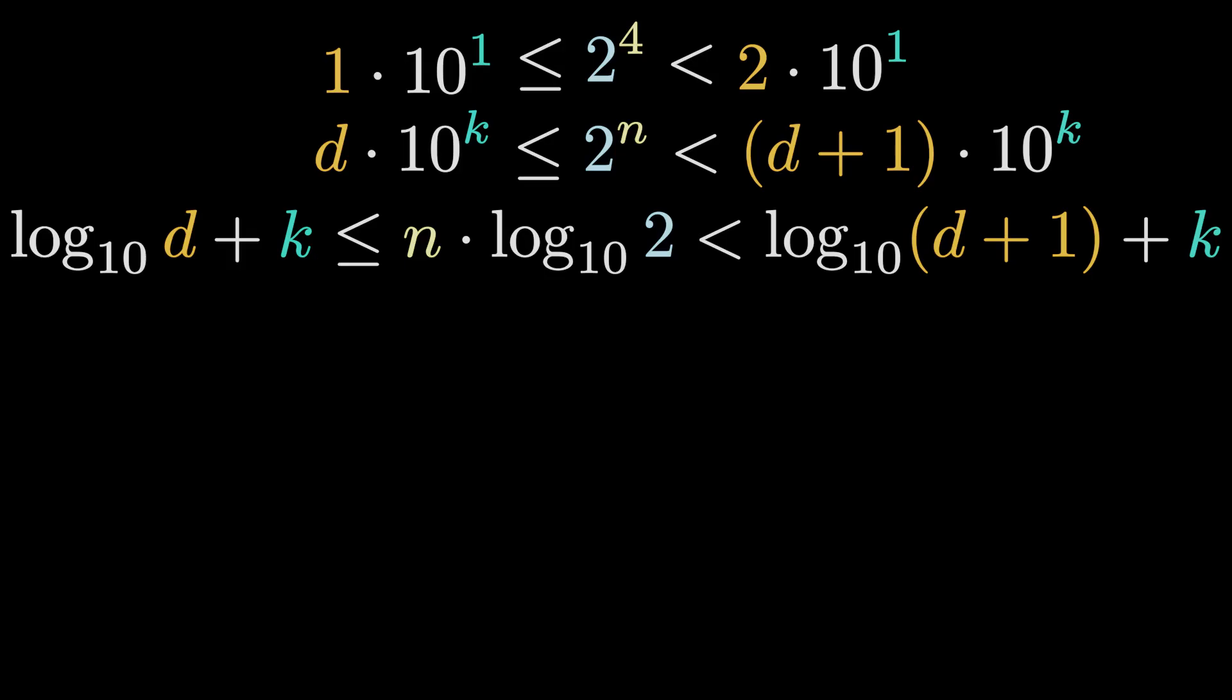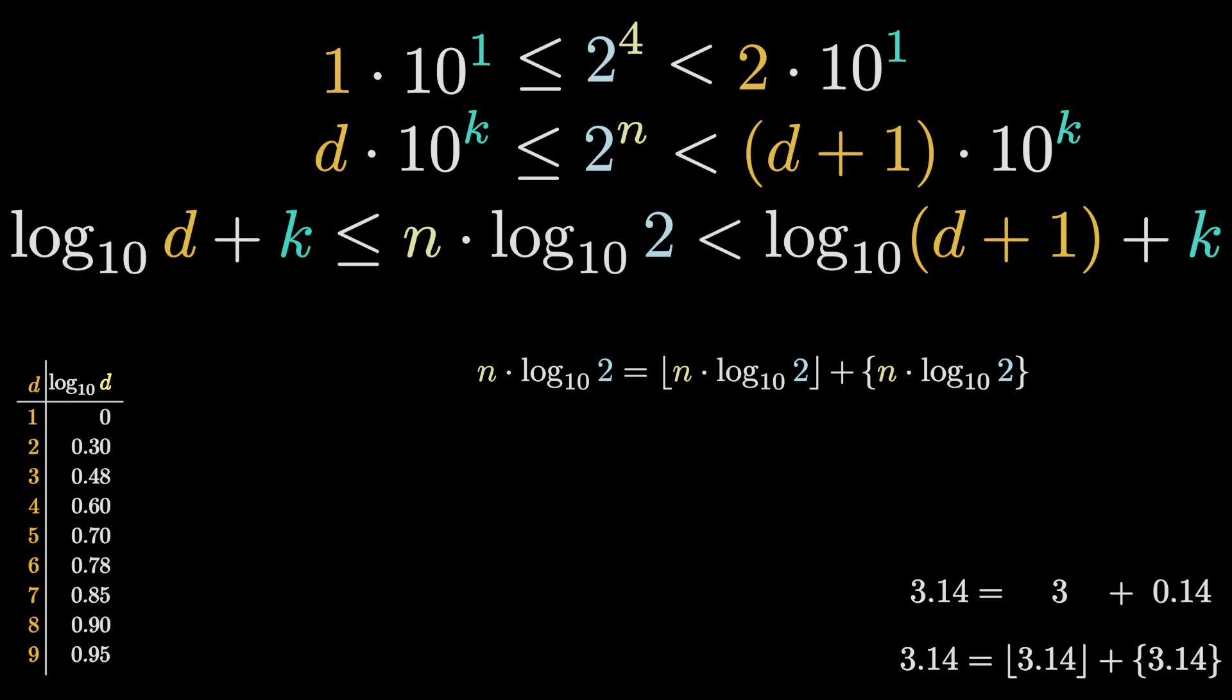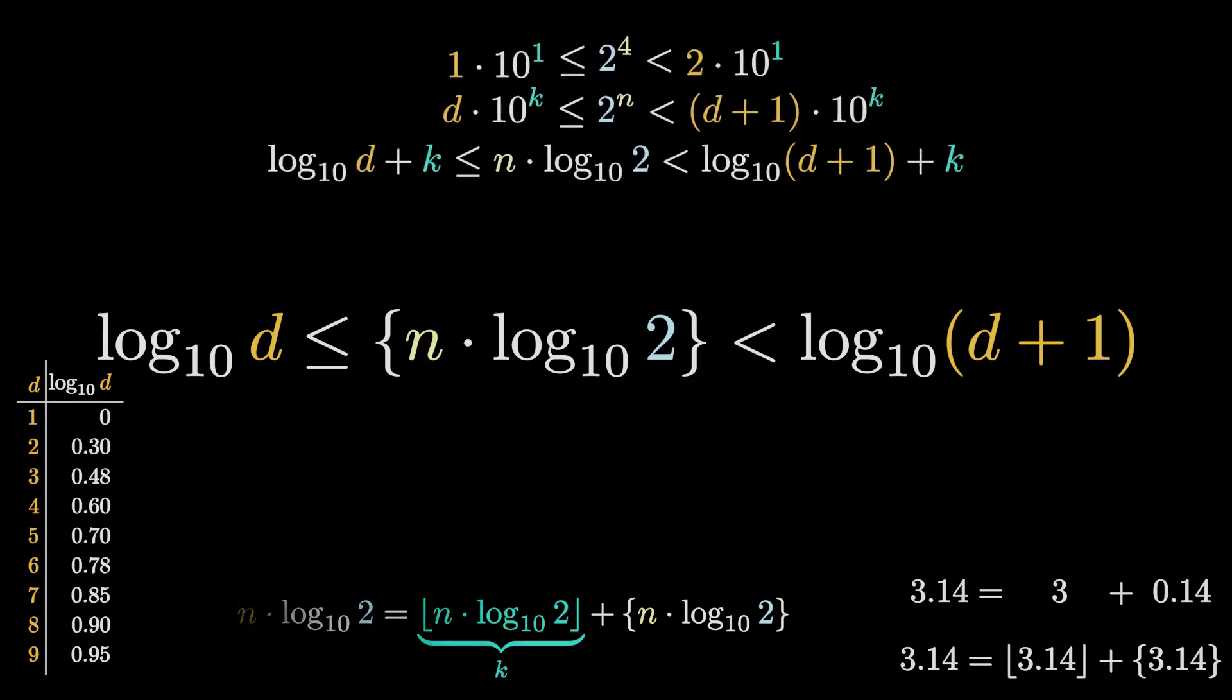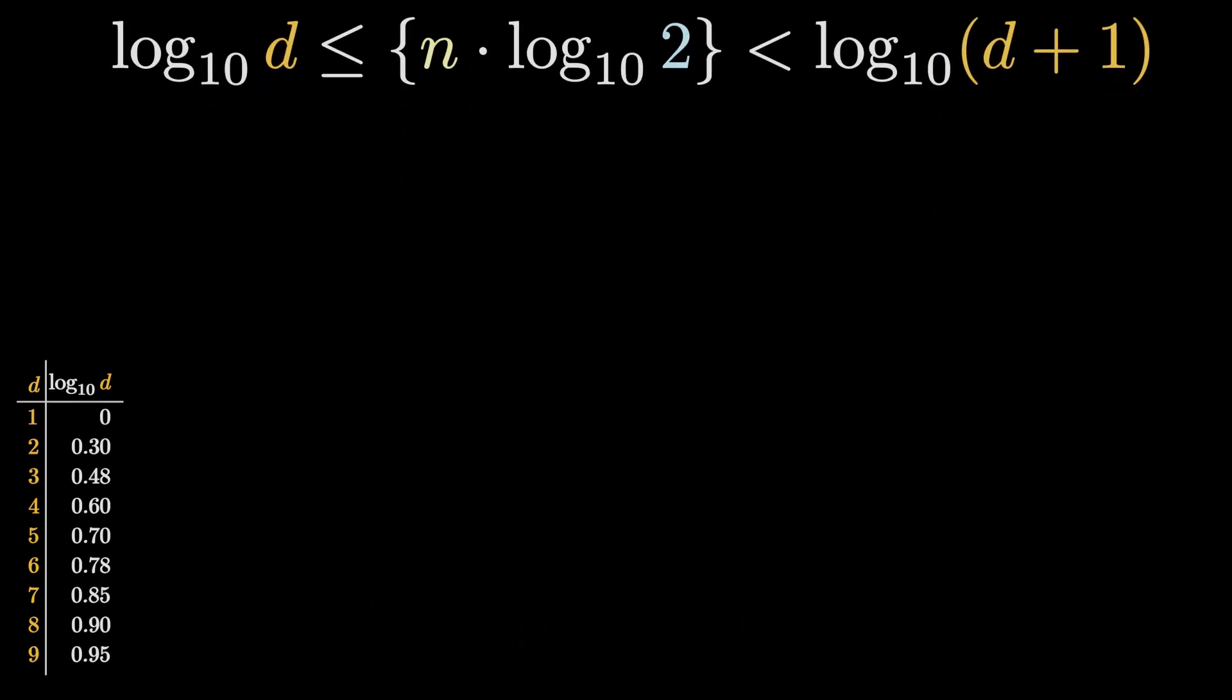Let's now return to our problem with the powers of 2. The next operation is not always taught in school. But it's a piece of cake in comparison to the sledgehammer of the logarithm. We just decompose a decimal number into its integer part and its fractional part. The integer part is usually called floor value and the fractional part is denoted with the curly braces. The table in the bottom left corner reminds us that the variable d takes integer values between 1 and 9 and that the logarithms of these values are strictly less than 1. From the inequalities we can immediately conclude that the floor part must be equal to k and we can subtract this part from all three terms. This is it. We arrive at our final statement and find out that the information about the leading digits is encoded in the decimals of the logarithm of 2 to the base 10.